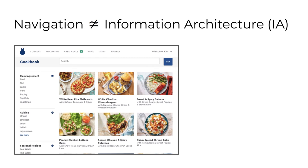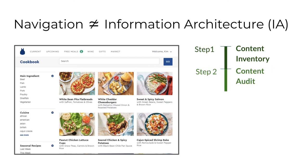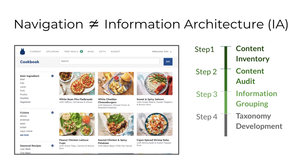IA is documented in spreadsheets and diagrams, not in wireframes. I want to help you think through the steps in the process of modeling content the way it's typically done in IA. First, IA begins with a content inventory where you locate and identify all existing content. The second step is a content audit where you evaluate that content for usefulness — things like accuracy, tone of voice, and overall effectiveness. The third step involves information grouping, where you describe the relationship between different pieces of content. Step four includes taxonomy development, where you define naming conventions to apply to all your content. The fifth step involves metadata creation to help users discover your content.